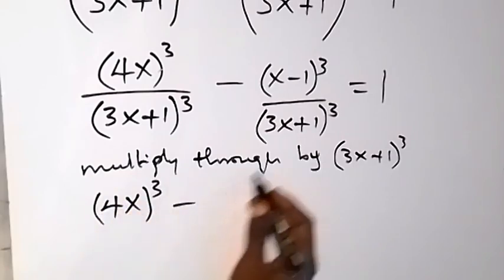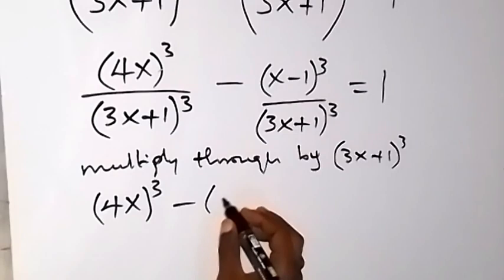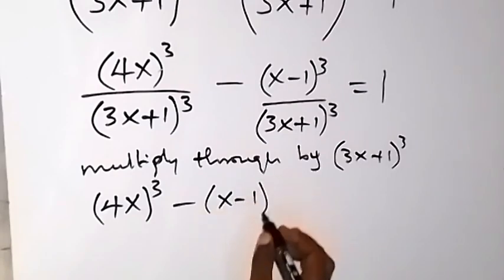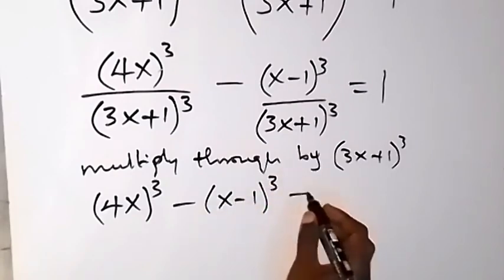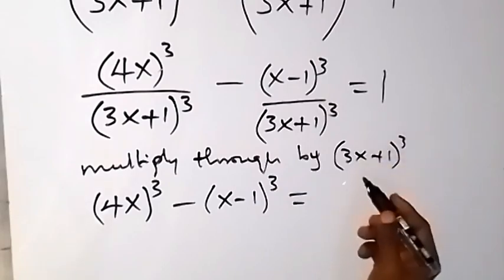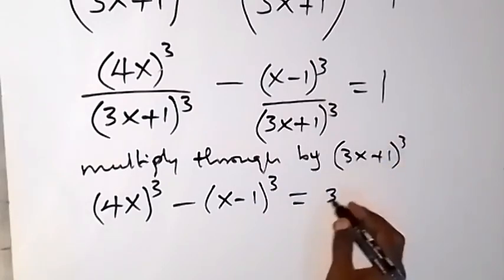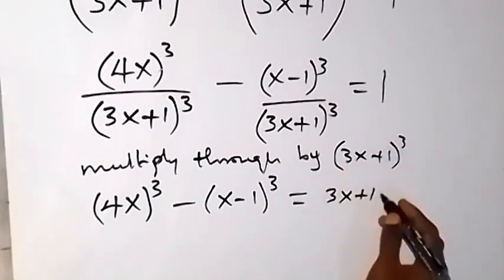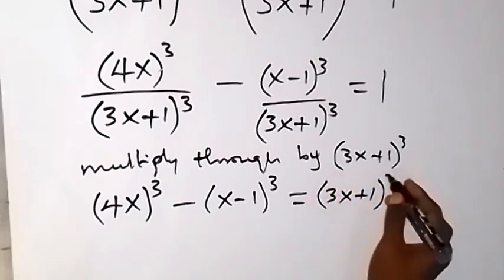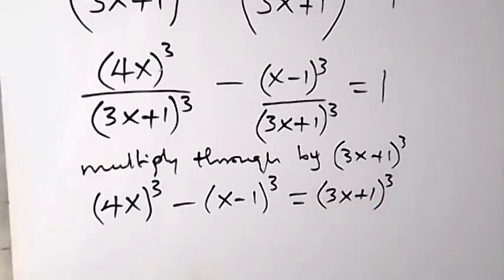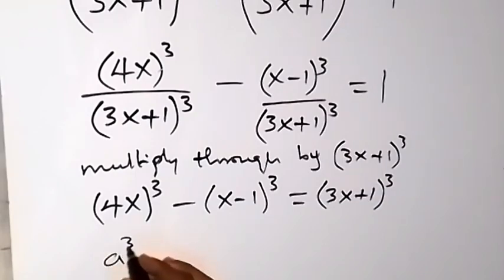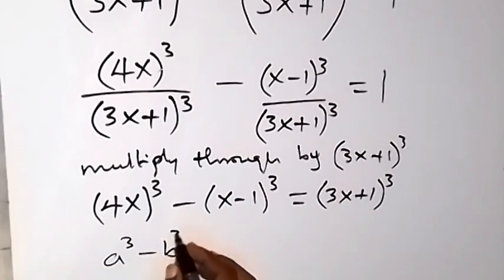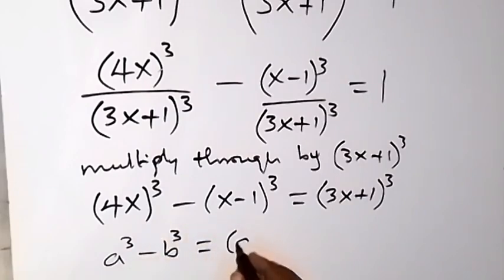Then minus, on this side we remain with (x-1)³. And when we multiply 1 by the LCM, we get (3x+1)³. From the left-hand side, we compare this with the identity a³ minus b³, which gives us (a - b).